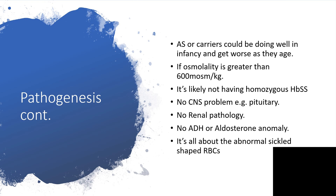AS carriers could be doing well in infancy but it will get worse as they grow in age. If osmolarity is greater than 600 milliosmoles per kilogram, it is not likely that individual is homozygous SS. Let me explain: this situation arises either because the person has hemoglobin SS — sickle cell disease — or not.